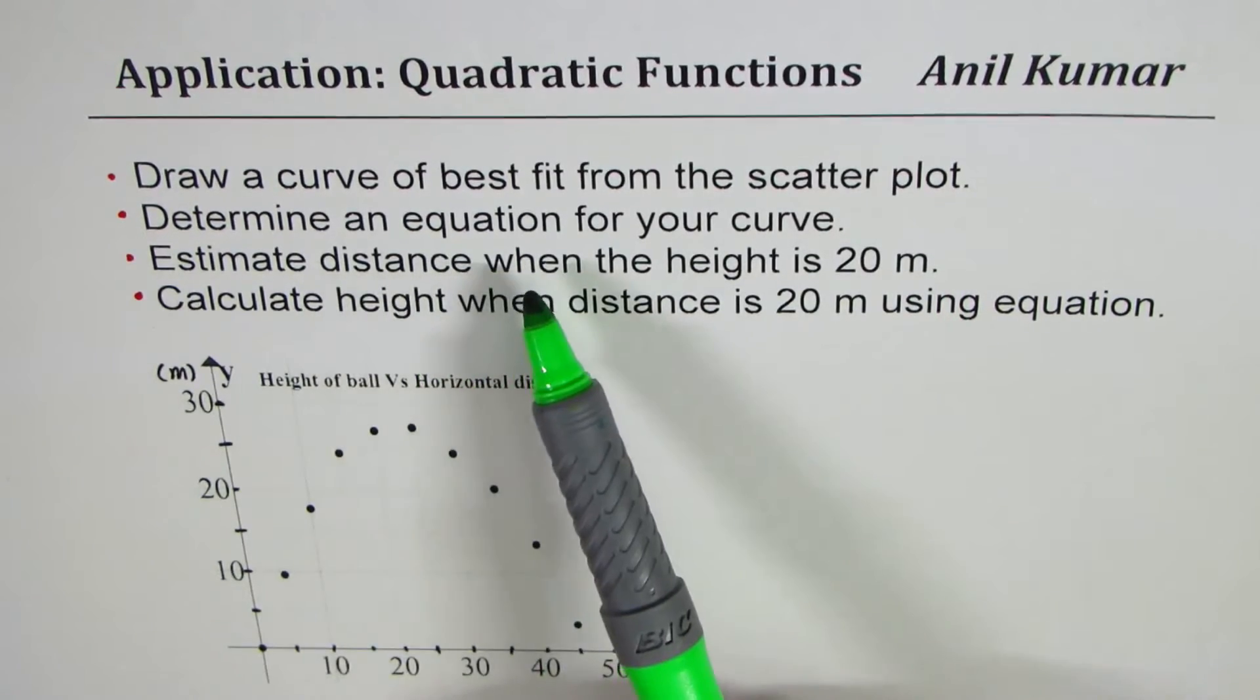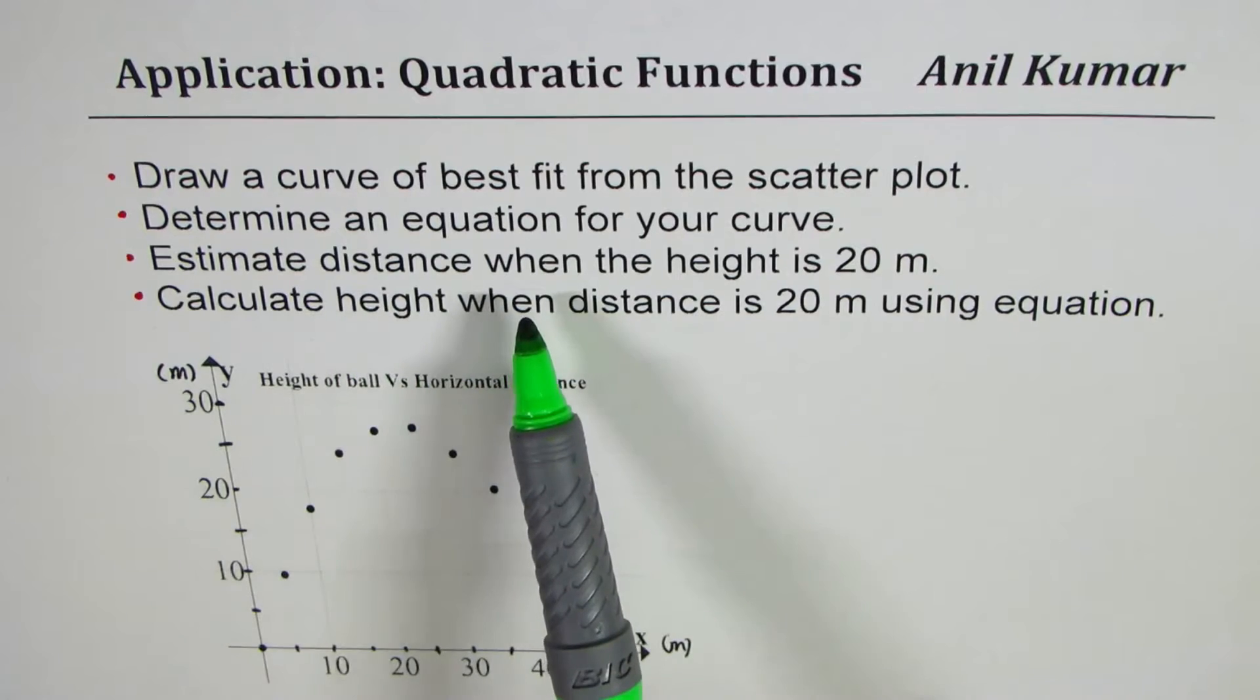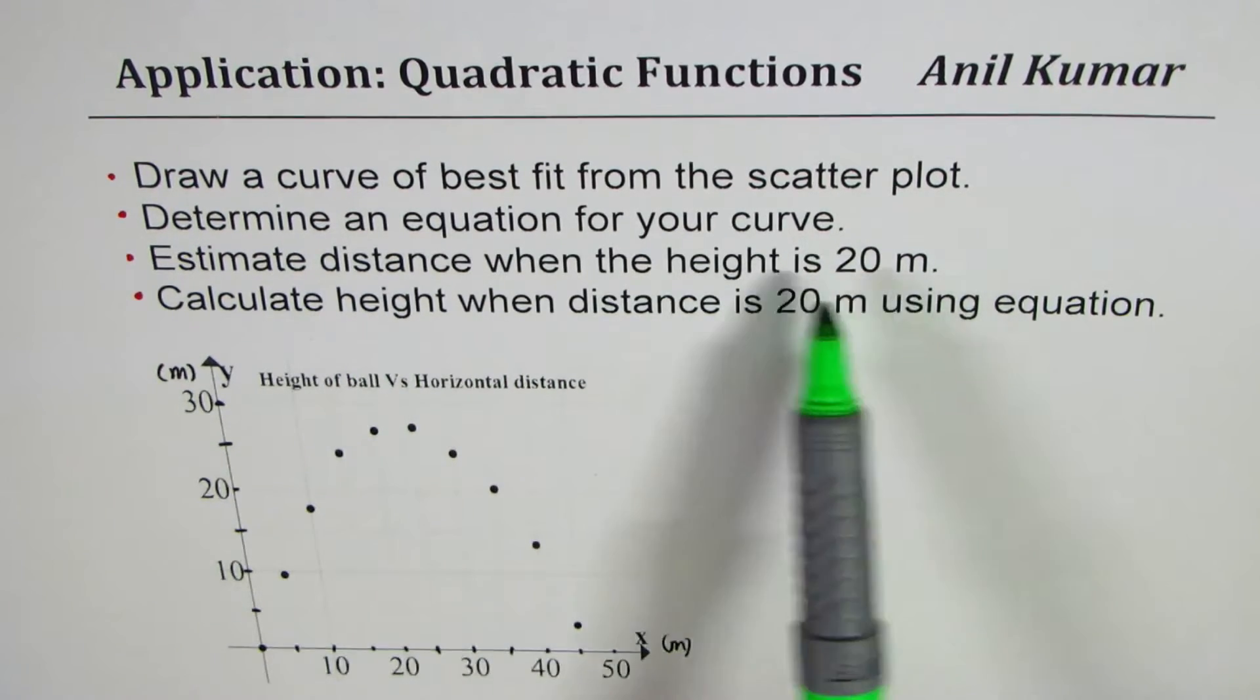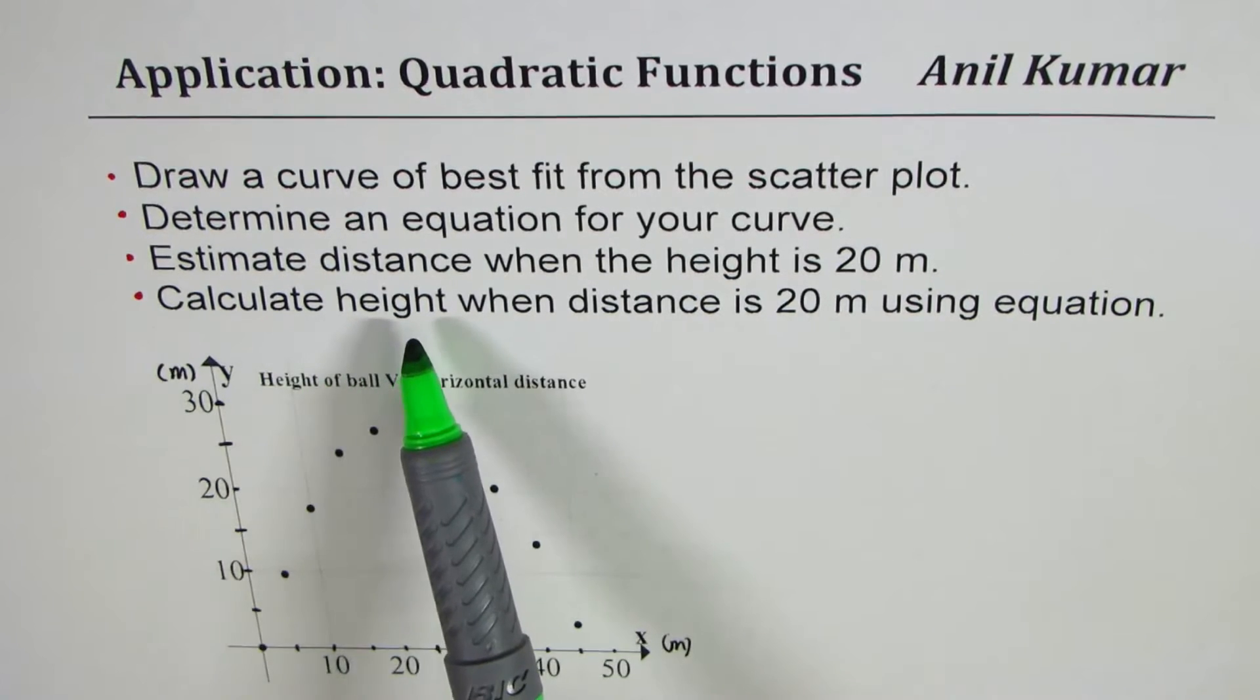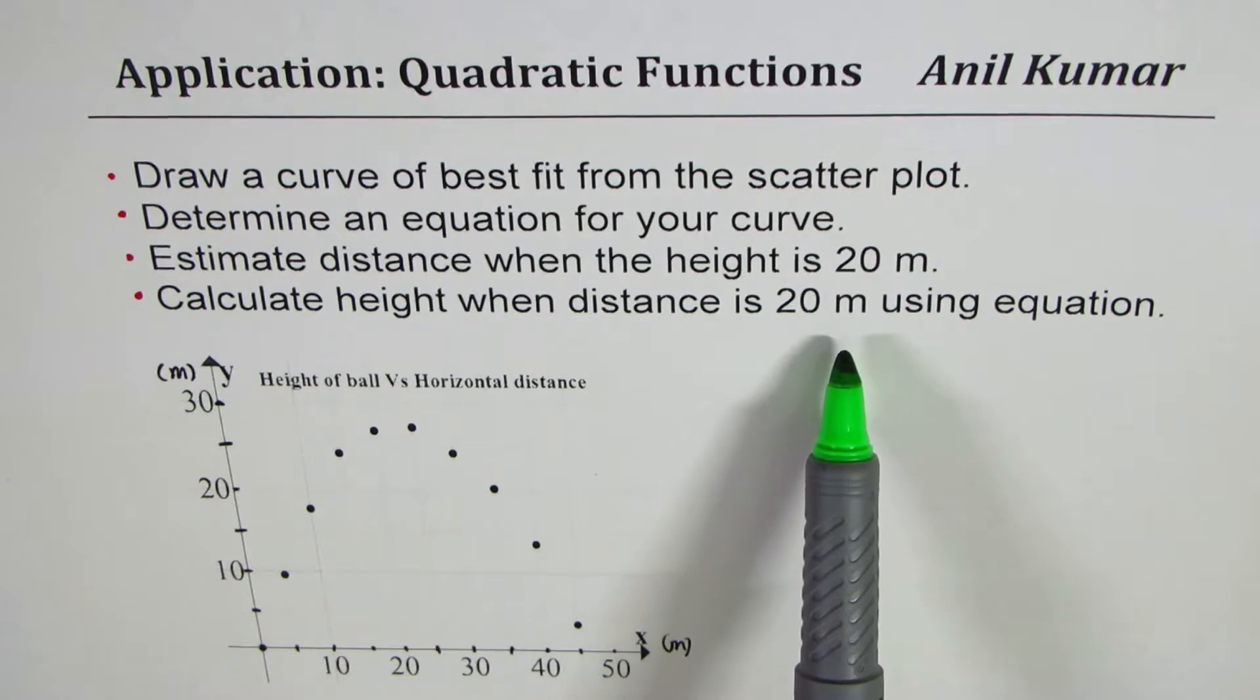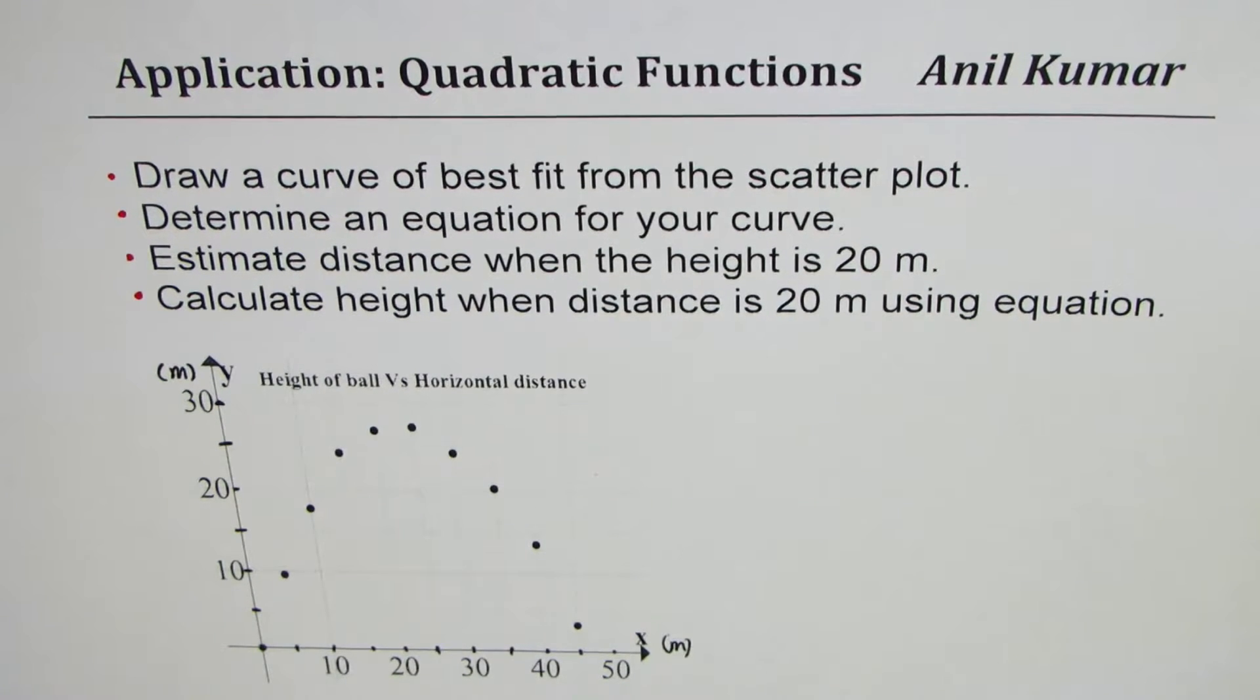Determine an equation for your curve. Estimate distance when the height is 20 meters - this you have to do from the graph. And the last part is to calculate height when distance is 20 meters using the equation which you derived in part B. You can always pause the video, answer the question, and then look into my suggestions.